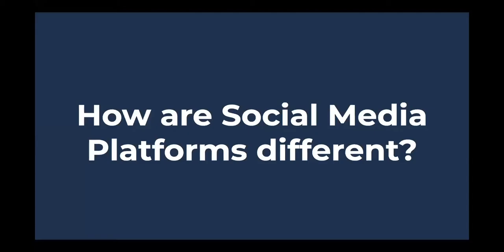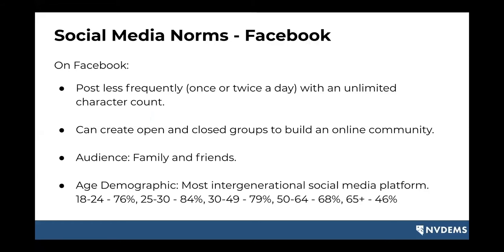So how are our social media platforms different? Some social media norms on Facebook: Facebook is a platform where you're usually posting less frequently. Most people post once or twice a day, and on Facebook you have an unlimited character count. You can also create open and closed groups on Facebook to help you build an online community. For example, on the NV Dems Facebook, we have a couple of groups — a volunteers group, a women's group, and a rural Democrats group.